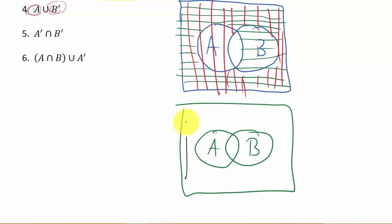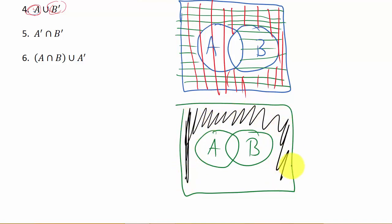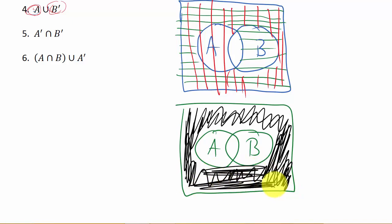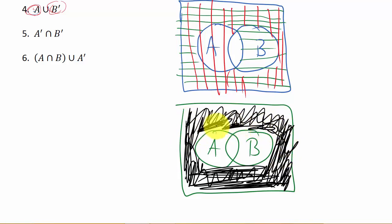Just come in and shade everything outside both circles — that's where the lines cross, so that's the intersection. This would be your final answer: everything outside of both sets is where A complement and B complement intersect.